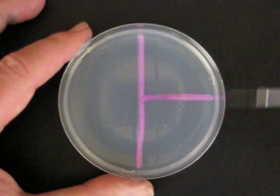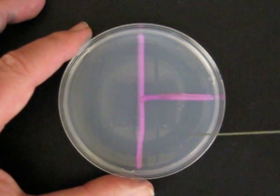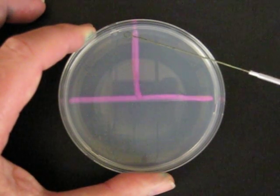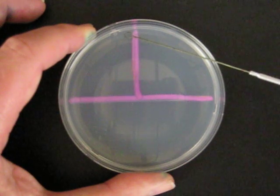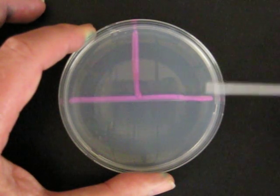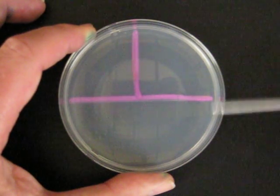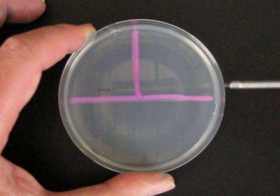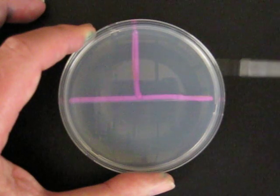The loop is carefully flamed to get rid of excess organisms, and the plate is rotated a quarter turn counter-clockwise. We can cool the loop by touching it to the medium. The inoculum for the second phase of streaking comes from the organisms which had been deposited in the first phase.